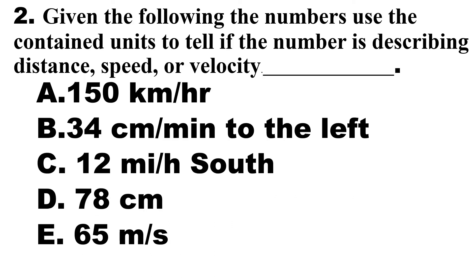Number 2. Given the following, use the contained units to tell if the number is describing distance, speed, or velocity. A. 150 km per hour. B. 34 cm per minute to the left. C. 12 miles per hour to the south. D. 78 cm. E. 65 m per second.